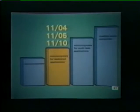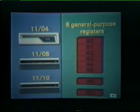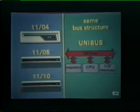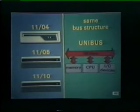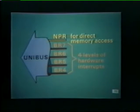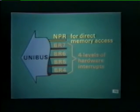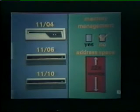We'll begin by describing the major characteristics that are common to all three of these minicomputers. Eight general-purpose registers are implemented in each. The 1104, 1105, and 1110 utilize the same bus structure: all communications between system components take place over the 56-line unibus. Four levels of hardware interrupts are implemented on the PDP-11 unibus, and an NPR level is also provided to accommodate direct memory access transfers. Memory management hardware is not available on the 1104, 1105, or 1110 minicomputers.